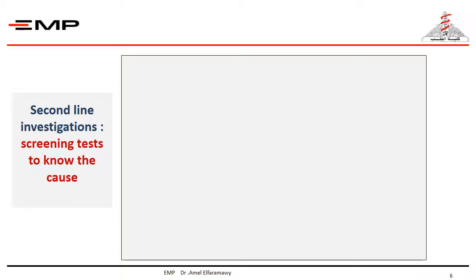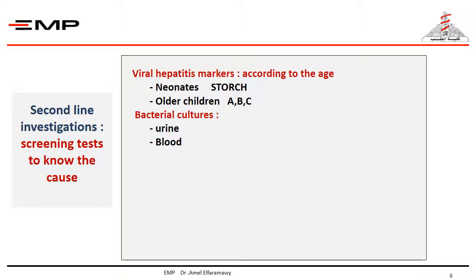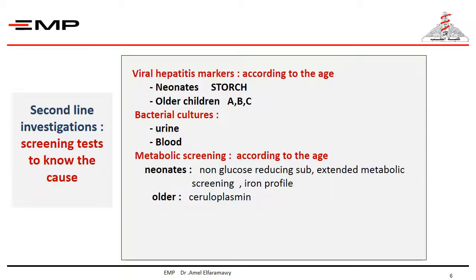Second-line investigations include screening tests to know the cause, according to what you are suspecting from the history taking and clinical examination. You can assess the viral hepatitis markers, do bacterial cultures, ask for metabolic screening, or assess gamma globulins and liver autoantibodies.